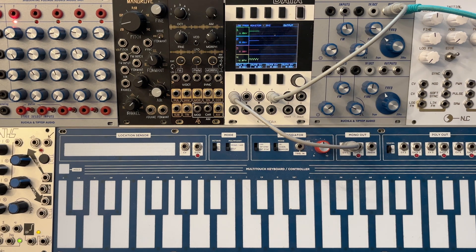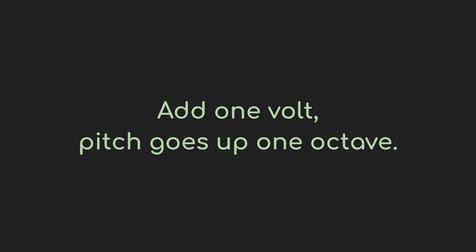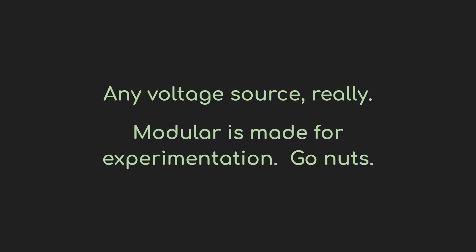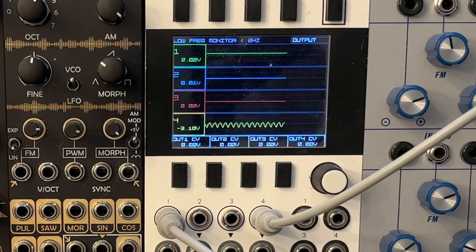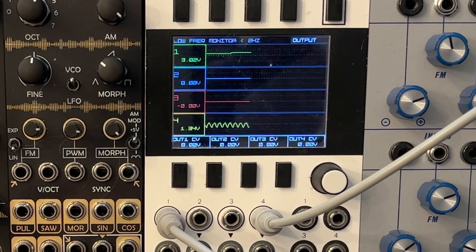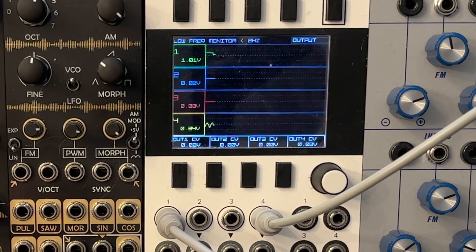The idea of volt per octave is pretty central to modular, and it's easy enough to understand the basics just from the name. Add one volt to the signal, and the pitch goes up by an octave. Often in modular we'll turn to a sequencer to output this voltage, but for our purposes right now, I think this is going to work better. This is the Sputnik Modular Multi-Touch Keyboard Controller, and it outputs voltage levels depending on the key you press. Start up here at middle C — when you look at the voltage monitor, you can see that it's registering two volts. If I go up an octave, you'll see that the monitor registers three volts. If I go down an octave, it registers one volt. So that one volt per octave thing is checking out.